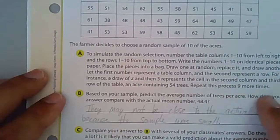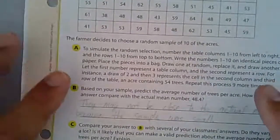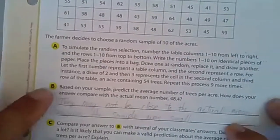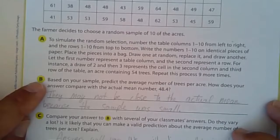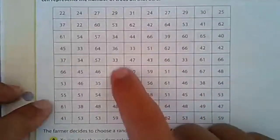Repeat this process nine more times so you're going to have a total of 10. Now I didn't do this. However, answer the next one here. Based on your sample, predict the average number of trees per acre. How does your answer compare to the actual mean of 48.4?